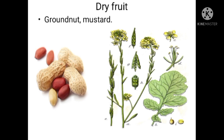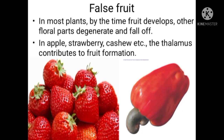Just as seeds have evolved various mechanisms for dispersal, many fruits have also evolved mechanisms for seed dispersal. In most plants, by the time the fruit develops, other floral parts like the sepals, petals, and stamens degenerate and fall off, because they are not involved in fruit formation — mainly the ovary is involved.